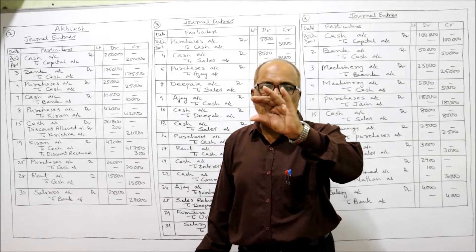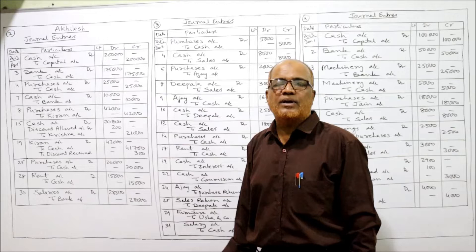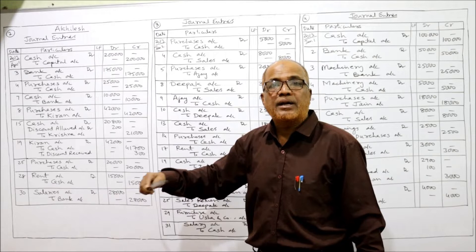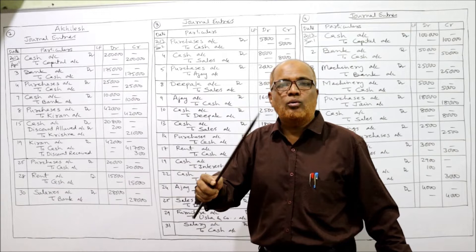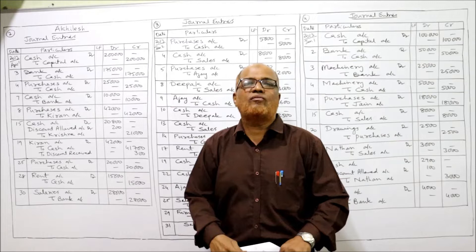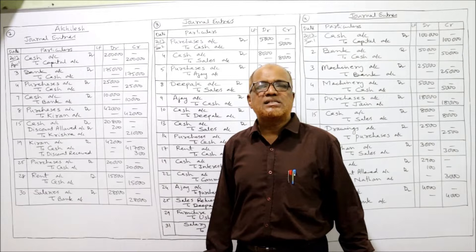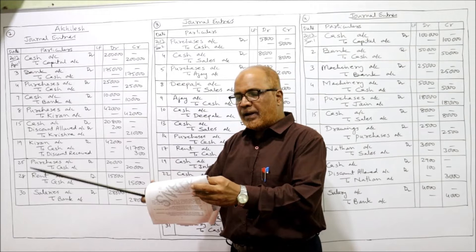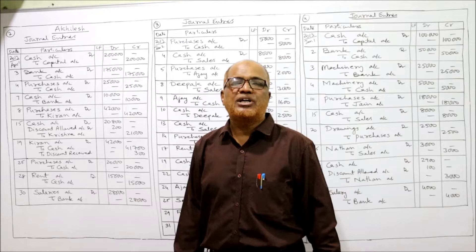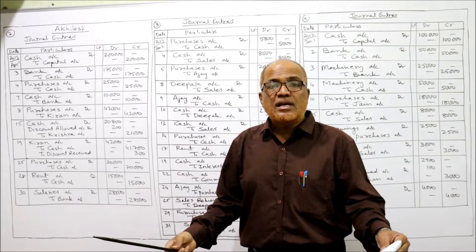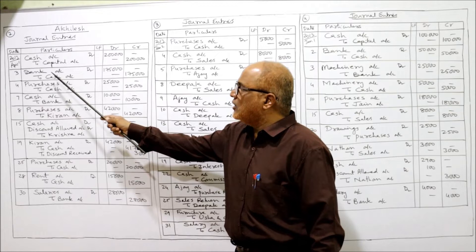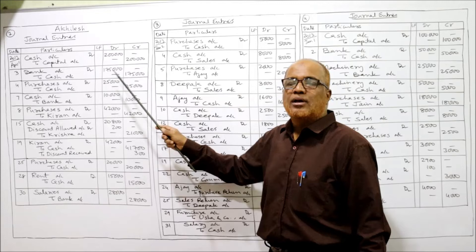I am not writing the narration here — in examination you must always give the narration. I'm explaining and dictating, so take a notebook and record the narration while watching. Narration: being the business started with cash. Second transaction, April 3rd: paid into bank — cash deposited into bank, cash is going out, so cash should be credited. Bank is the receiver, so bank account debit to cash 1,75,000.